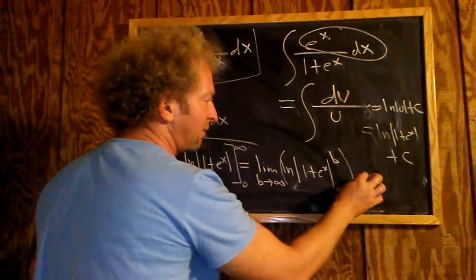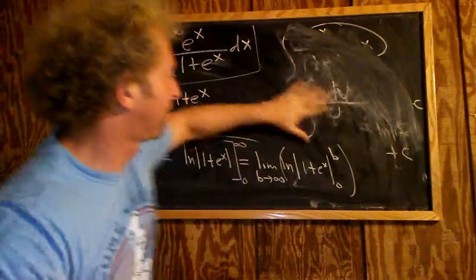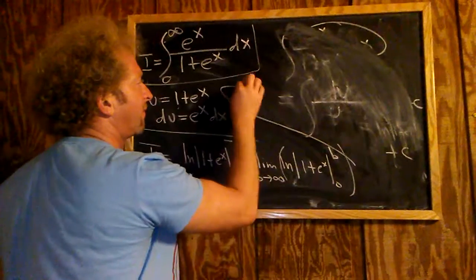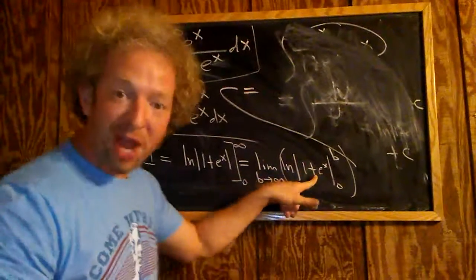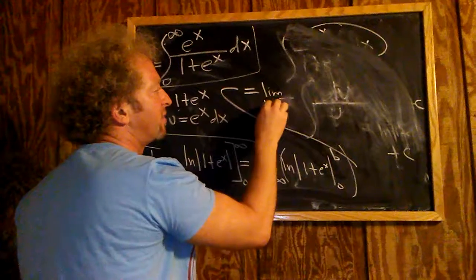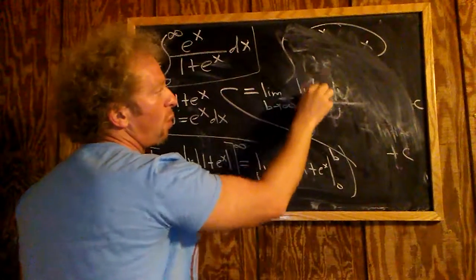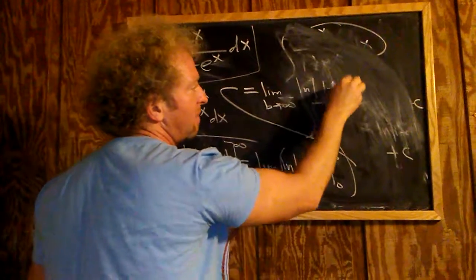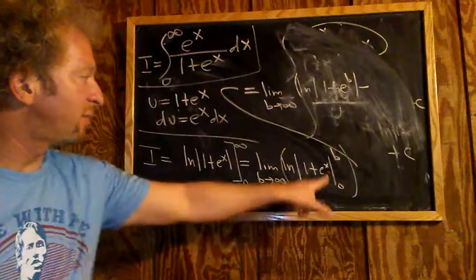Let's see, this is going to be equal to, let me come up here, let me erase this. Come up here. So this is equal to, such a small board. So first we plug in the b. We subtract, then we plug in the 0. So we get limit, as b approaches infinity. And then here we get ln, 1 plus e to the b, minus, we plug in b first. Then you plug in 0.